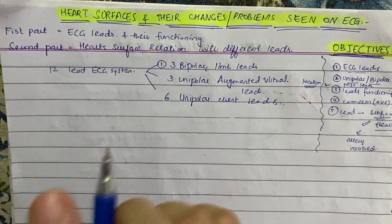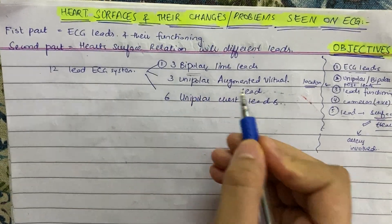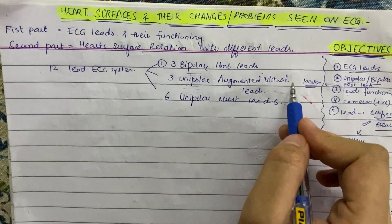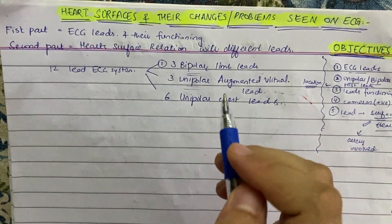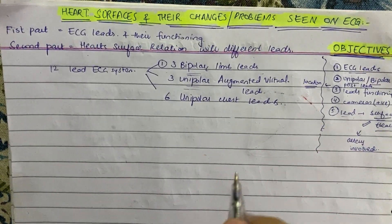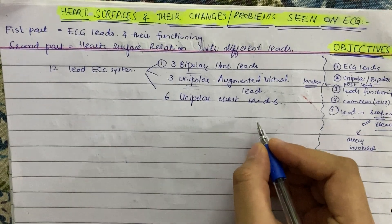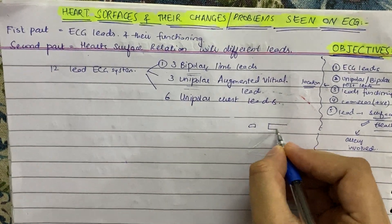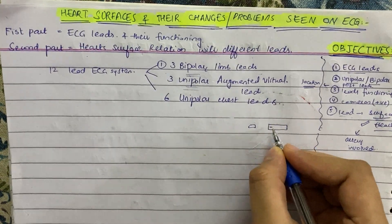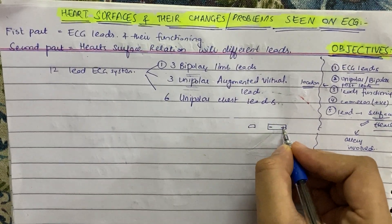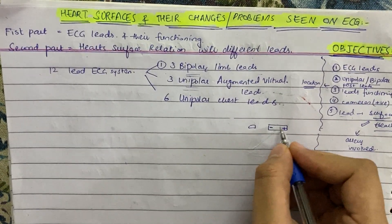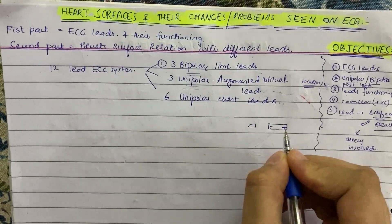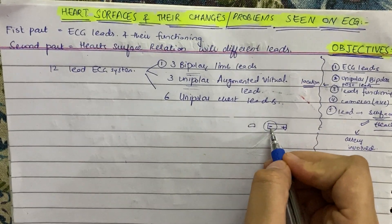Now the question comes: what is bipolar and what is unipolar? A pole refers to two ends — suppose a thing has two ends, one negative and one positive. That is called bipolar — it has two poles attached. Unipolar means it has only one pole, either negative or positive.